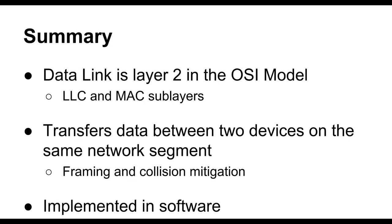To summarize: the data link layer is layer two in the OSI model and can be conceptually broken into the LLC and MAC sub-layers. This layer is responsible for transferring data between two devices on the same network segment, and in doing so it implements framing and collision mitigation. It is primarily implemented in software, though in many cases that software takes the form of firmware running inside network devices.